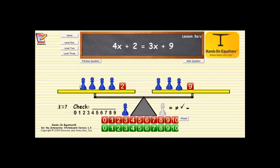And if each x is 7 we would have 7, 14, 21, 28, and 2 is 30. So let's put the 30 over here. And on the other side we have 7, 14, 21, and 9 is 30. So the other side is also 30.